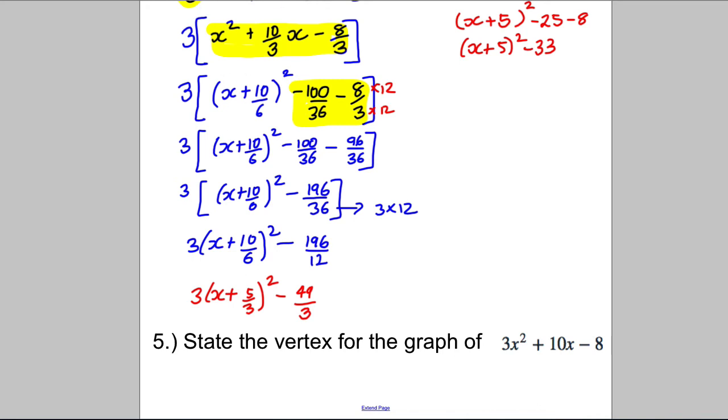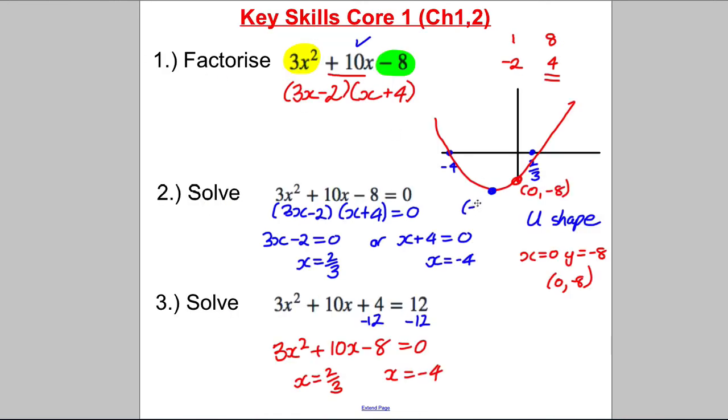Now the great thing about completing the square is that it gives you the vertex of the graph almost for free. You look at this number and you look at this number here. And the vertex of the graph, the minimum point of the graph or the maximum is always the opposite sign of this number and that number as it is. So the vertex is going to be negative 5 thirds and it's going to be negative 49 over 3. Going back to our previous page where we drew this, that would be there. So negative 5 thirds, negative 49 over 3 like that and it looks reasonable.